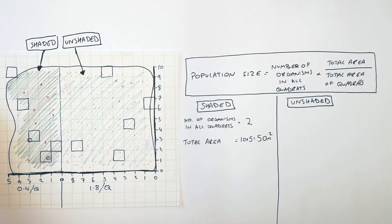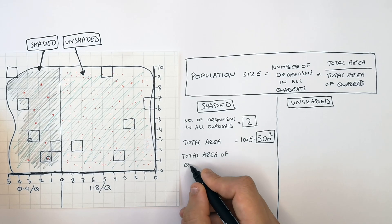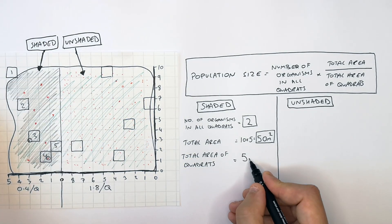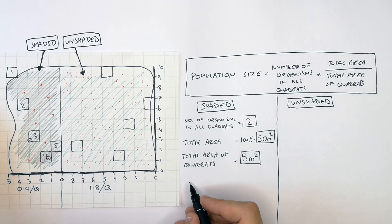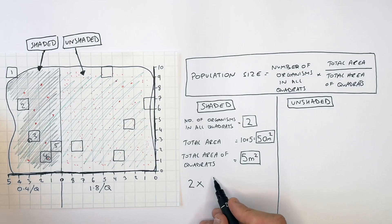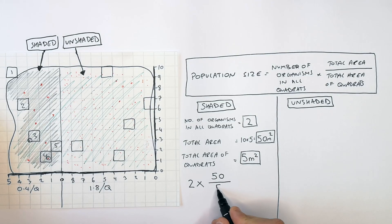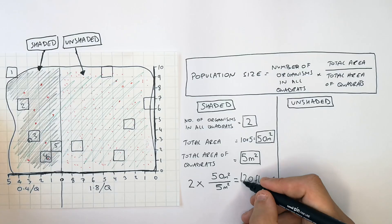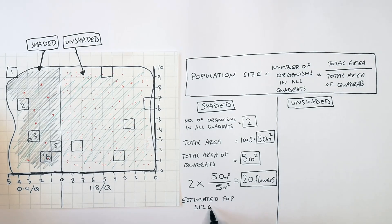Each of the quadrats are one square meter — one meter by one meter. So if we've got five quadrats, the total area of the quadrats is five square meters. Now you do: 2 organisms in all the quadrats, times by 50 meters squared (the total area), divided by the total area of the quadrats which is 5. That gives you an estimated population size of 20 flowers.